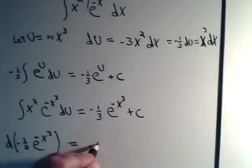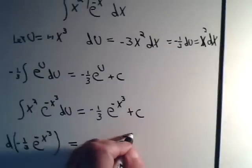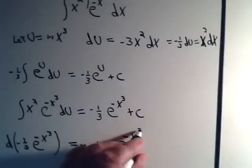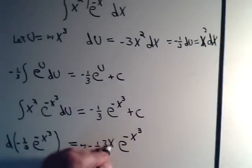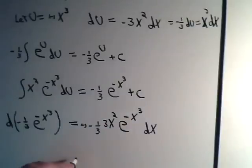And so here this would be minus one-third, and the differential of e to the minus x cubed is e to the minus x cubed times the differential of this power, and so that's going to be another minus sign, and that would be 3x squared dx. Just taking the differential of this term here, 3x squared dx with a minus sign before it, so this will equal x squared e to the minus x cubed dx.